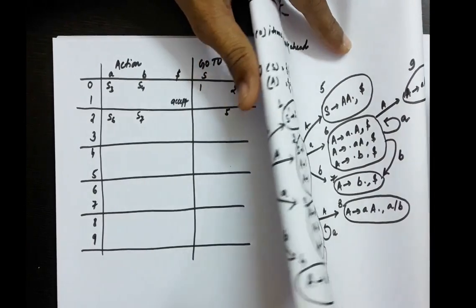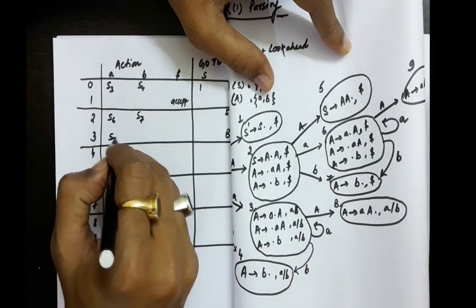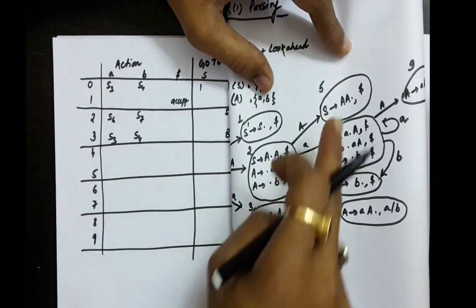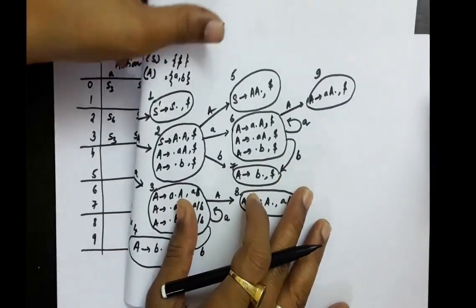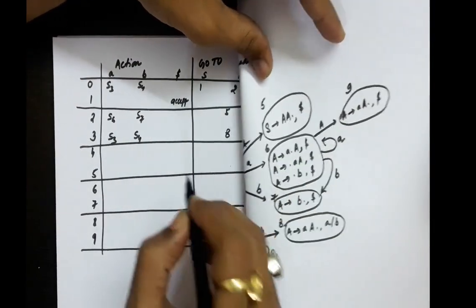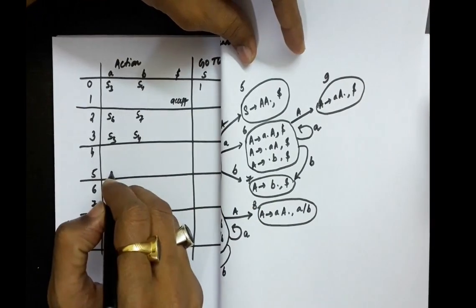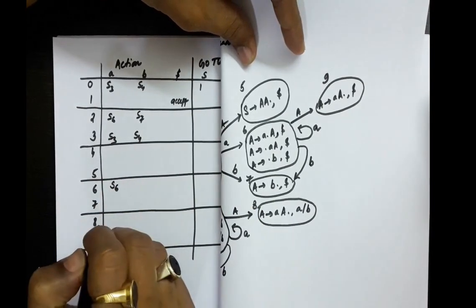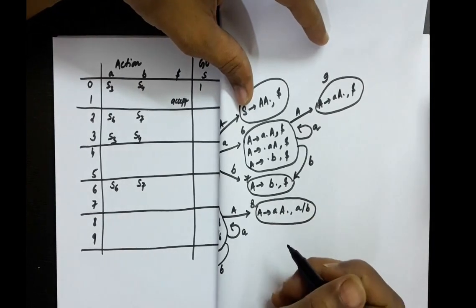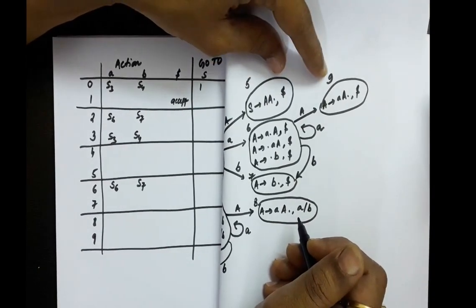From 3 with capital A, you are going to state 8. From 3 with small a, you are going to remain in the same state, so S3. From 3 with small b, S4. No transition from 4, no transition from 5. From 6 on capital A, you are going to 9. From 6 on small a, you remain in state 6, so S6. From 6 with small b, S7. From 8 and 9, there is no transition.